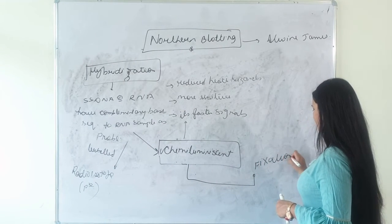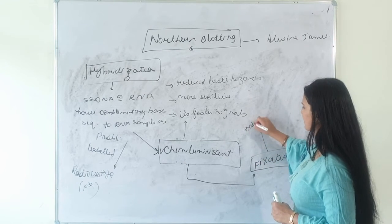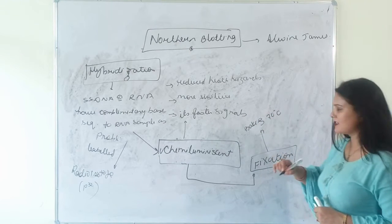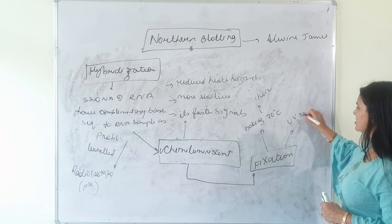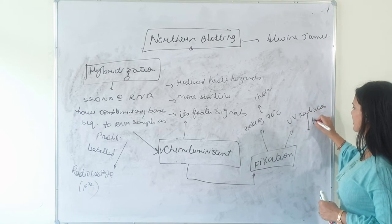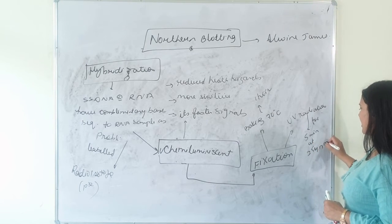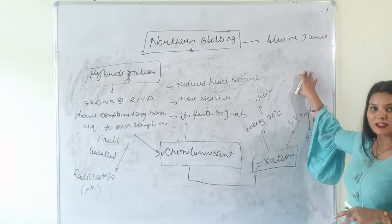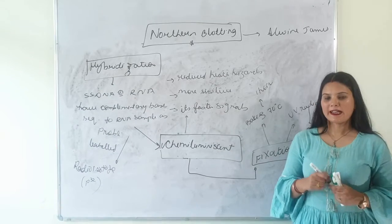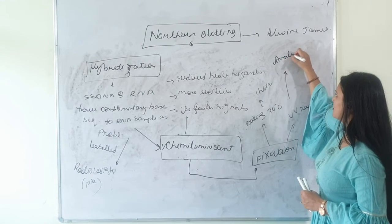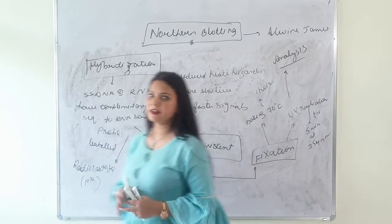Next step is fixation. Fixation is basically termed either baking a membrane at 70 degrees celsius for 1 hour or treating it with UV radiation for 5 minutes at 254 nanometers. And fixation is basically termed for permanent immobilization of RNA fragment on the blotting membrane. And the last step after fixation is analysis by autoradiography. And to know the process of autoradiography refer to our previous videos.